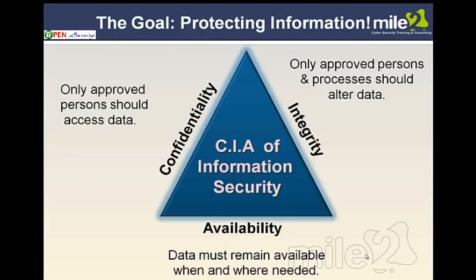The core of all security classes you hear is CIA: confidentiality, integrity, availability. With confidentiality, think of encryption — keeping information where it's not readable by someone we wish not to read it. Maybe it's our information at a hospital or a bank, and we do not want some stranger reading our confidential information. So we encrypt the information, which basically puts it in a format that looks almost like a foreign language — it's basically all rearranged, it looks like gibberish. Only people with the decryption keys — the appropriate people — could read it.